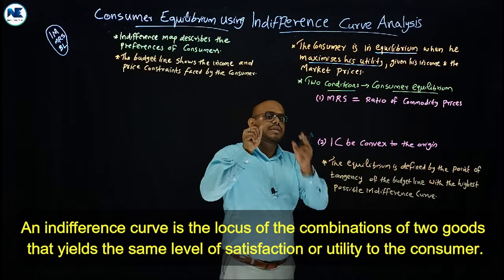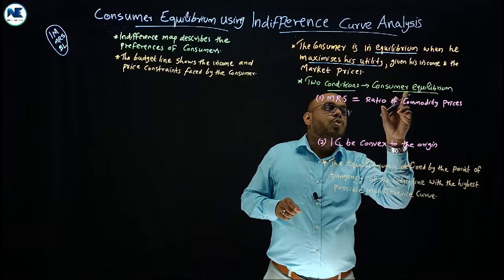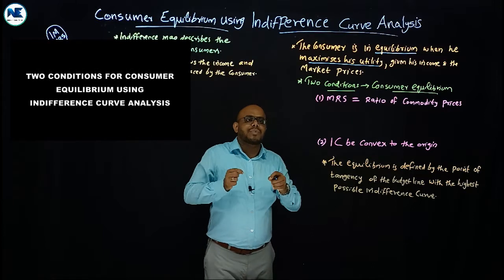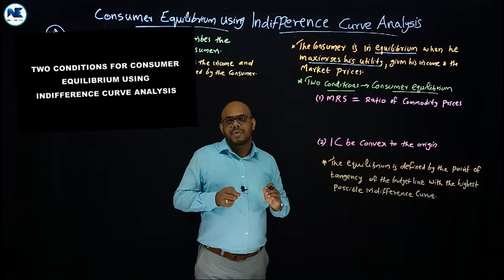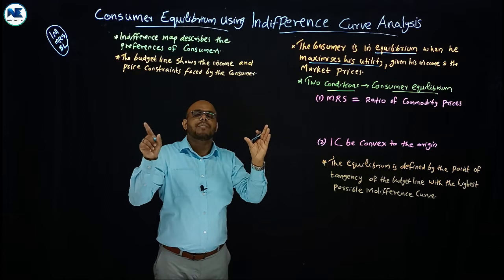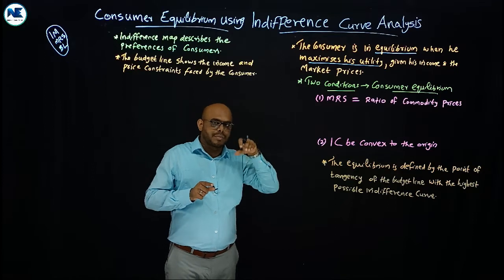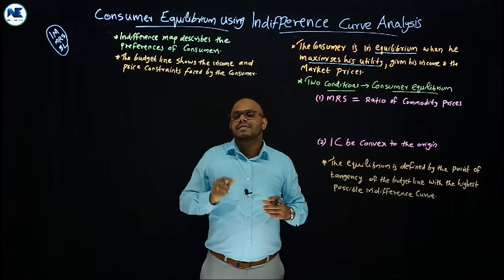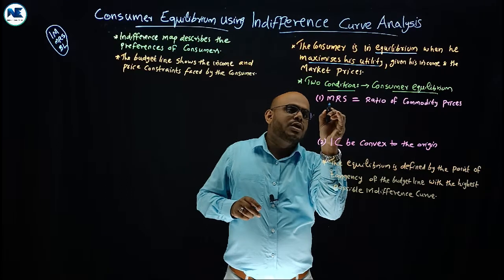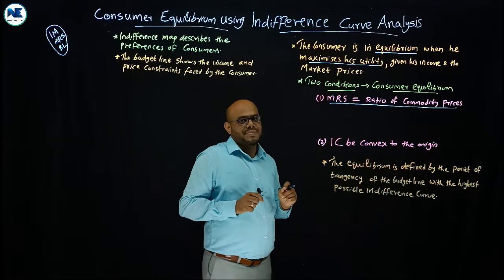There are two conditions that must be fulfilled for a consumer to reach equilibrium. The first condition is that the marginal rate of substitution is equal to the ratio of commodity prices.